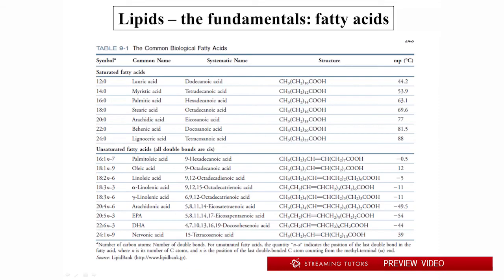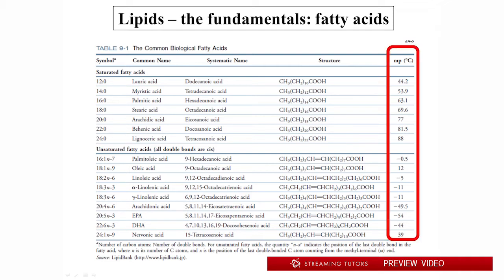Let's look at the implications of saturation for the behavior of fatty acids with regard to melting temperature, as shown in the table here. The fatty acids in the top half of the table are all saturated, and the ones in the bottom half are all monounsaturated — a very convenient comparison. For the saturated fatty acids, even the shortest one with 12 carbons has a melting point above human body temperature at 42°C — body temperature being 37°C. As these fatty acids get longer, their melting temperature gets higher and higher, so these would be solid fats at body temperature. In contrast, the monounsaturated fatty acids have much lower melting temperatures.